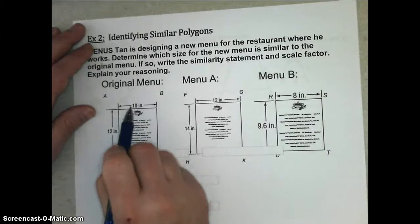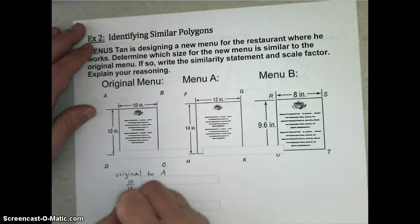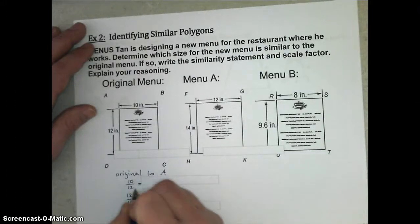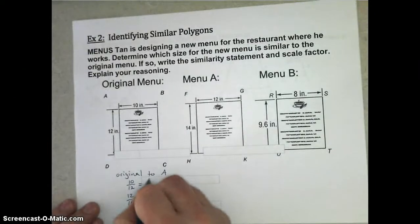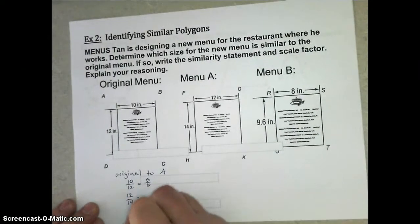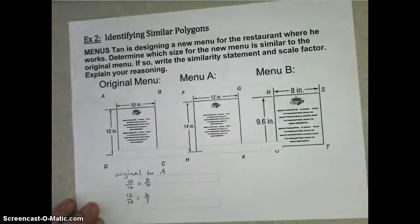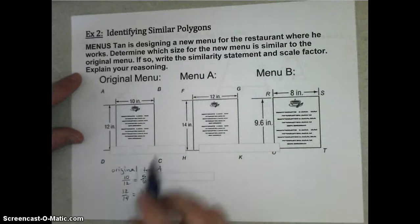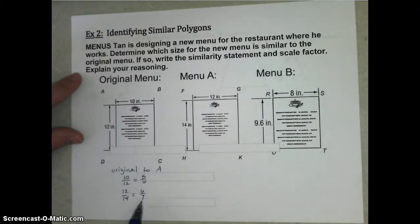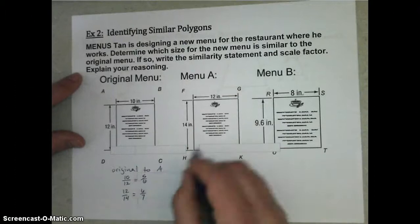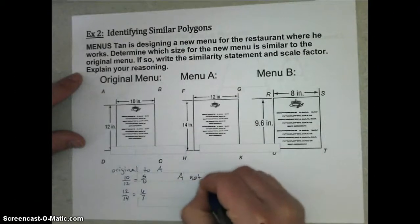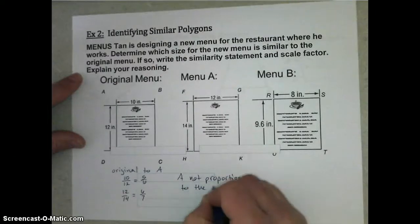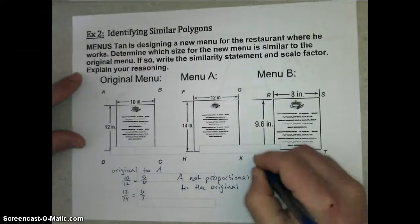So let's take a look at the dimensions of our original menu. We have a 12 by 10 rectangle. And menu A is now 14 by 12, and menu B is 9.6 by 8. And so we have to figure out which of these would have a similar ratio if we compare corresponding parts. So let's check original to menu A first. Original to A would be 10 to 12, and 12 to 14. This ratio, 10 to 12, reduces to 5 out of 6, and 12 over 14 reduces to 6 over 7. Now, if these were to be proportional, then their corresponding sides should have equal ratios. Well, we have one ratio of 5 over 6, another ratio of 6 over 7. Those are not equal ratios, so A is not proportional to the original.